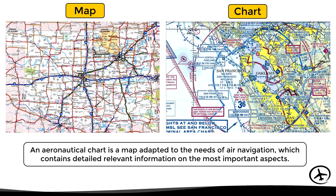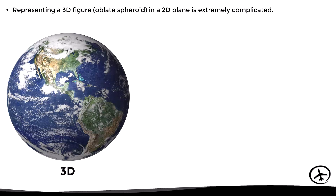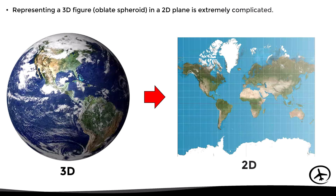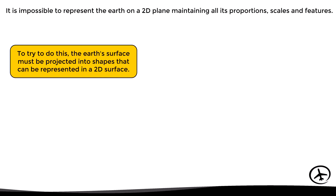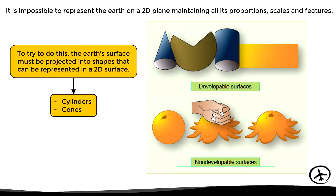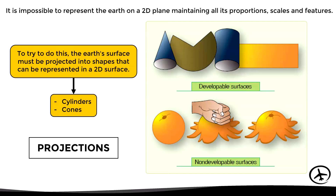When we try to create a map or chart that correctly represents the surface of the earth, we run into a big problem: representing a 3D figure such as the earth on a 2D surface is extremely complicated, since it is impossible to maintain all proportions, scales, and features correctly. To get as close to perfection as possible, the earth's surface must be projected into shapes that can be represented in 2D, such as cylinders or cones, which are developable surfaces. These attempts are known as projections.